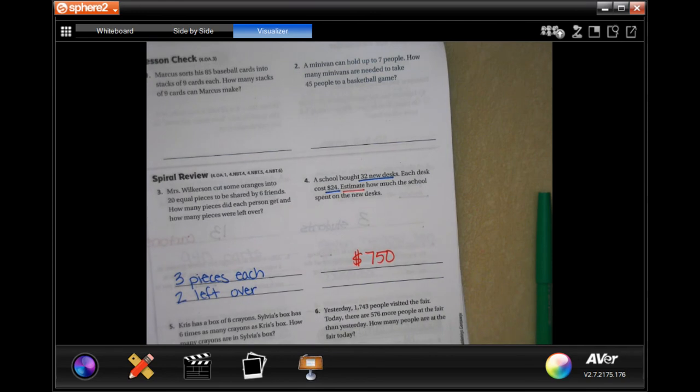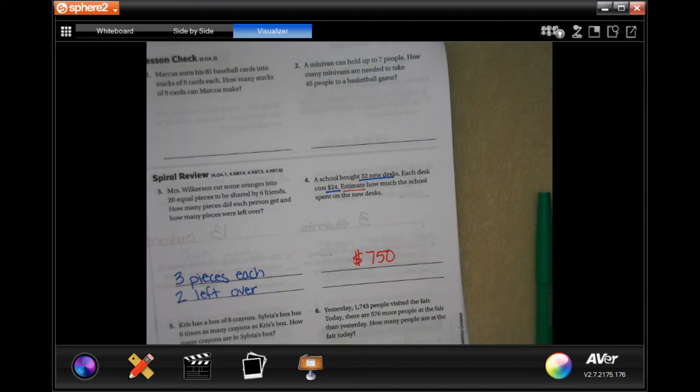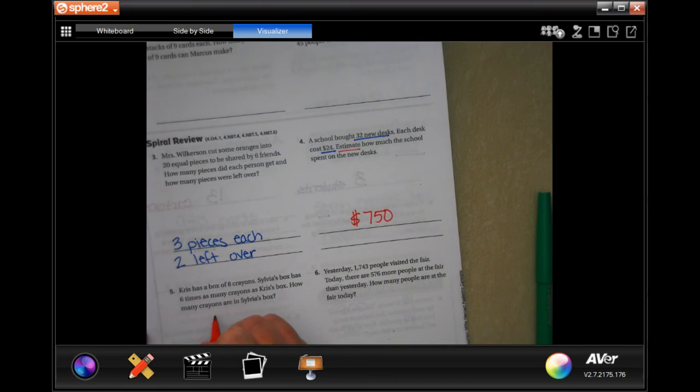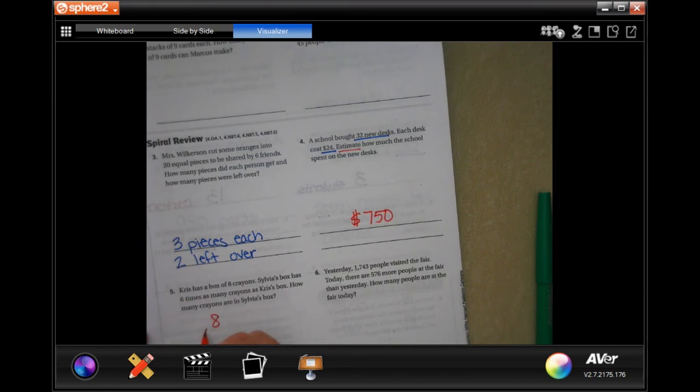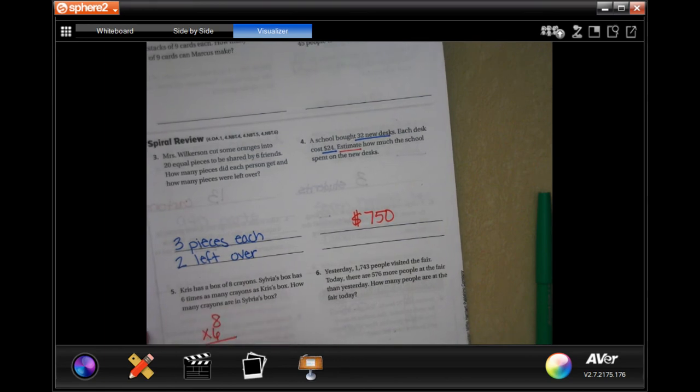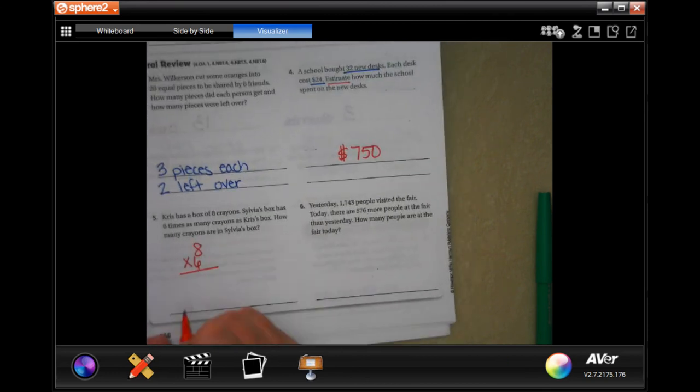Chris has a box of 8 crayons. Sylvia's box has 6 times as many crayons as Chris's box. How many crayons are in Sylvia's box? Well, 8 crayons in Chris's, hers says 6 times as many. Well, 6 times 8 is 48 crayons. There you go.